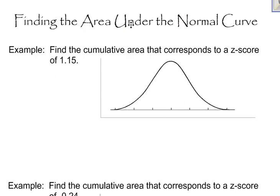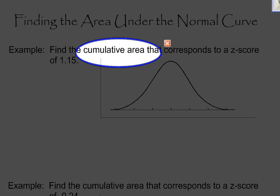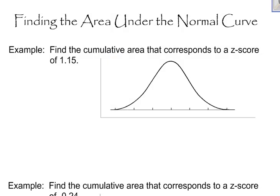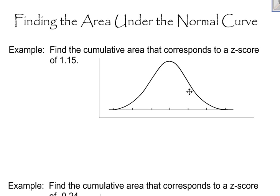I'm going to be finding the area under the normal curve. Find the cumulative area that corresponds to a z-score of 1.15. When you see the word cumulative area, that means you are finding the area to the left of a particular value. I highly recommend, if you are finding the area under the curve, that you draw a picture. The first three rules of statistics should be: number one, draw a picture; number two, draw a picture; number three, draw a picture.